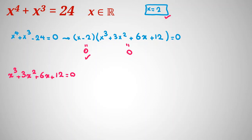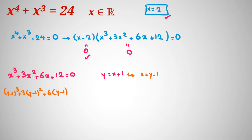For solving this type of cubic equation, a change of variable is a useful idea. Here I want to get rid of the x squared term, so I define y equal to x plus 1 — which also means x equal to y minus 1. Replacing, we get y minus 1 cubed plus 3 times y minus 1 squared plus 6 times y minus 1 plus 12 equal to 0. To expand, you need the binomial theorem: a minus b cubed equals a cubed minus b cubed plus 3ab times b minus a.